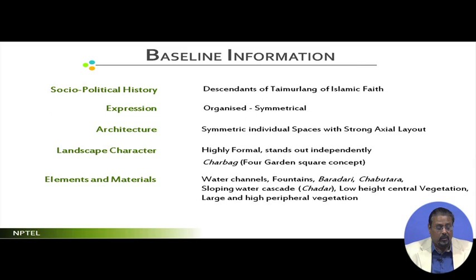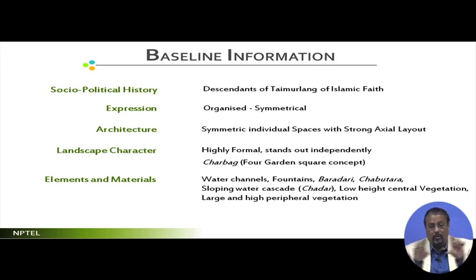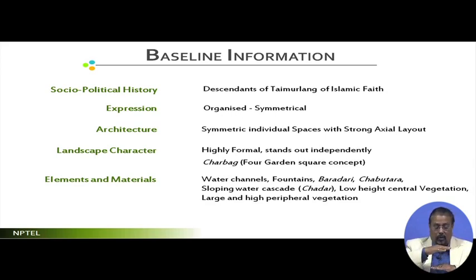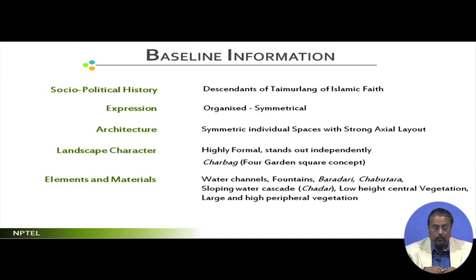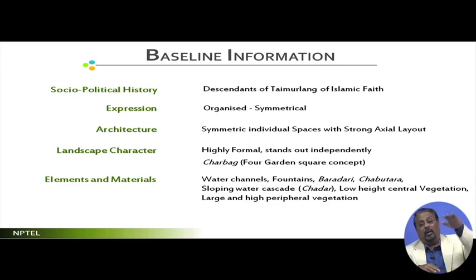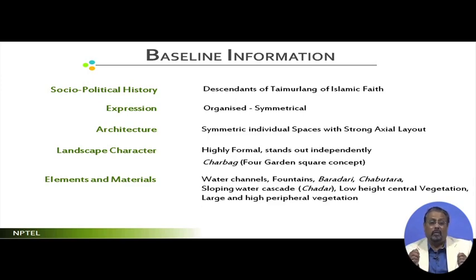The Char Bagh concept was first introduced in the example of Ram Bagh in Agra - of course the garden is in a bad state now, but that is the first start of the Char Bagh. Later it was followed by everybody until the Mughal gardens were fully developed. The elements and materials include water channels, fountains, Baradari, Chabutara, and sloping water cascades called Chadar. Baradari is the elevated place for the rulers over flowing water, similar to what we saw in Spanish gardens. The water is to flow below their elevated position to cool the temperature - this gave them a very nice experience. Chabutara is a square podium placed over or very close to the water, almost at water level, where people had cultural activities and rulers sat with their courtiers.